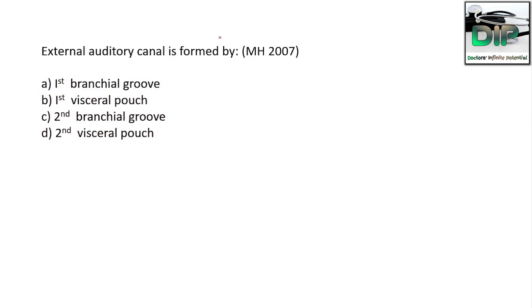Another question: The external auditory canal is formed by — option A: first branchial groove; option B: first visceral pouch; option C: second branchial groove; option D: second visceral pouch. The correct answer is the first branchial groove.